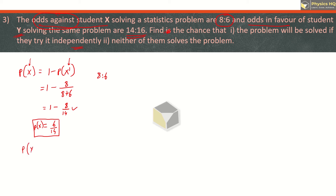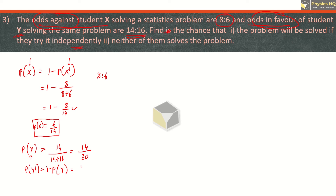Similarly for y, odds in favor are given as 14 is to 16, so probability of y is 14 upon 14 plus 16, which is 14 by 30. Probability of y dash is 1 minus 14 by 30, which is 16 by 30.